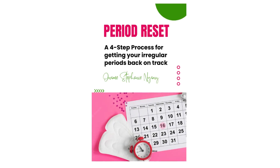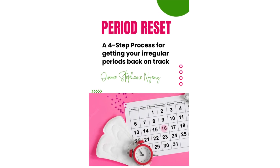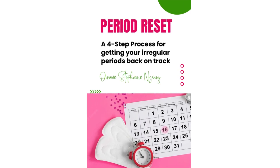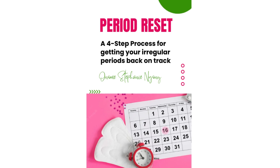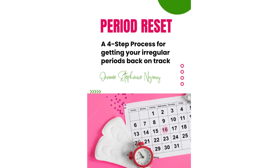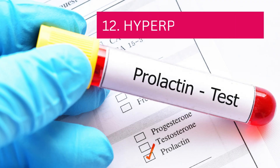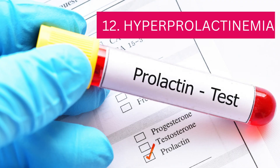You might be feeling tense after watching this video — you shouldn't be. Irregular periods or anovulation are more common than you think, and can often be corrected. You can get my free Period Reset Guide, an ebook where I talk about a four-step process to getting your periods right back on track. The link will be in the description.